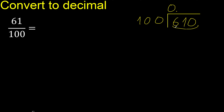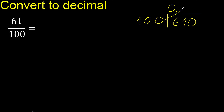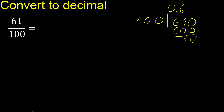0. is not less than 100. Multiplied by which number is nearest to 610 but not greater? Multiplied by 7 is 700 — is greater. Multiplied by 6 is 600. Subtract, the remainder is 10.